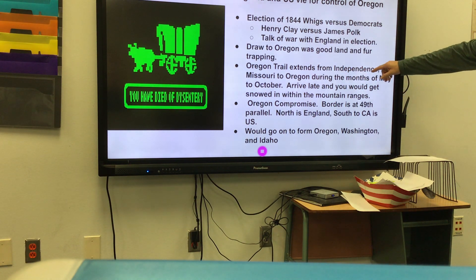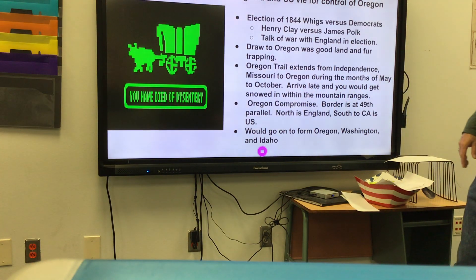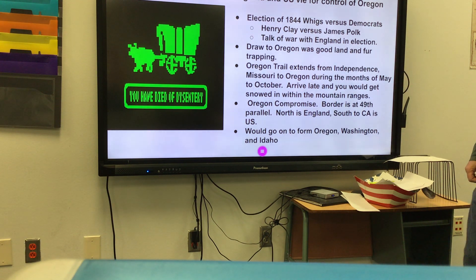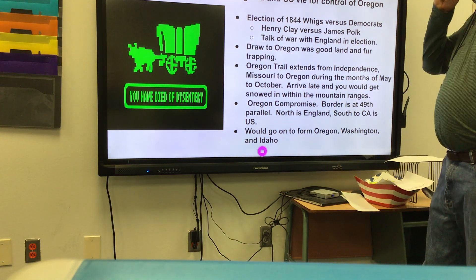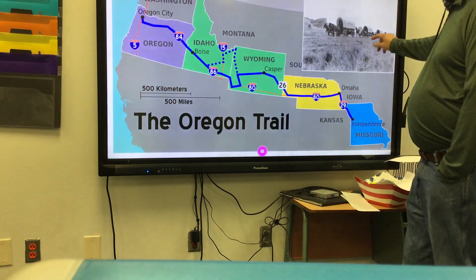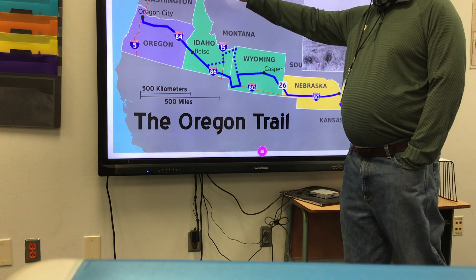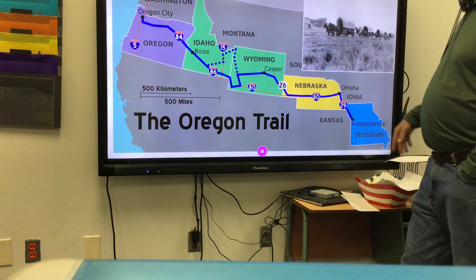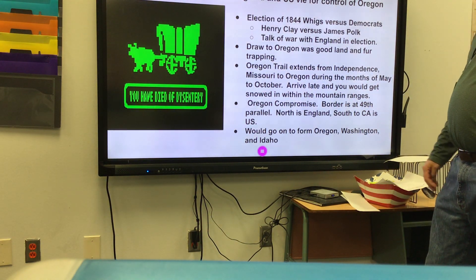The Oregon Trail extended from Independence, Missouri all the way to Oregon. If you arrive late you're going to get snowed in within the mountain ranges, so you have to time it correctly and push through — it's a hard drive, you don't have time to lollygag. The border is set at the 49th parallel — north of that is English territory, south to California is the US. It's not a river, just a line of latitude. From this Oregon territory you get the states of Oregon, Washington, and Idaho.